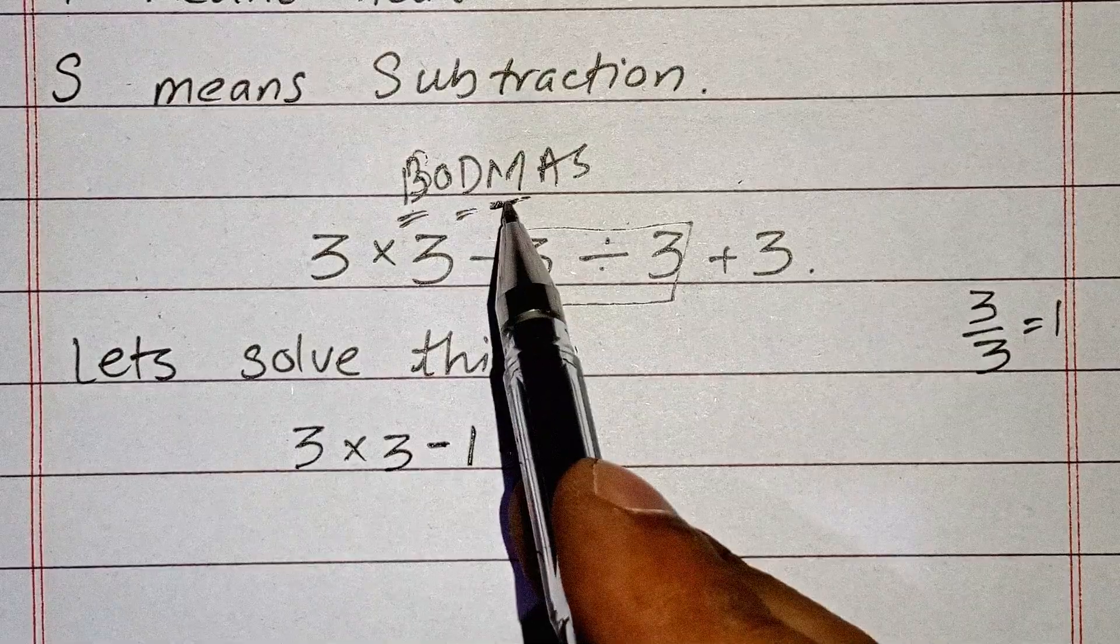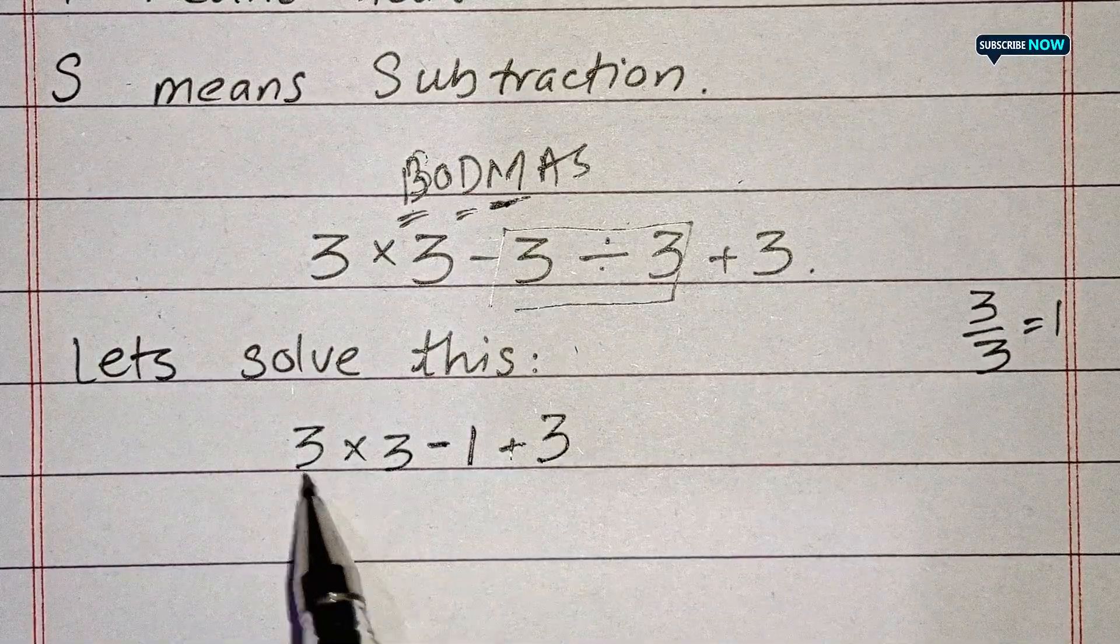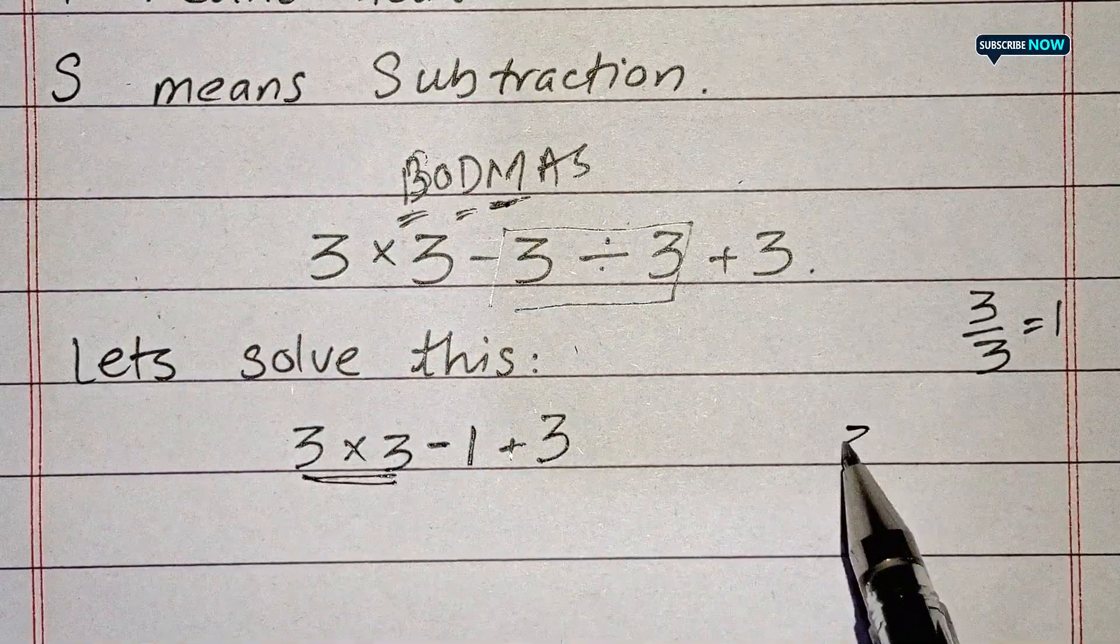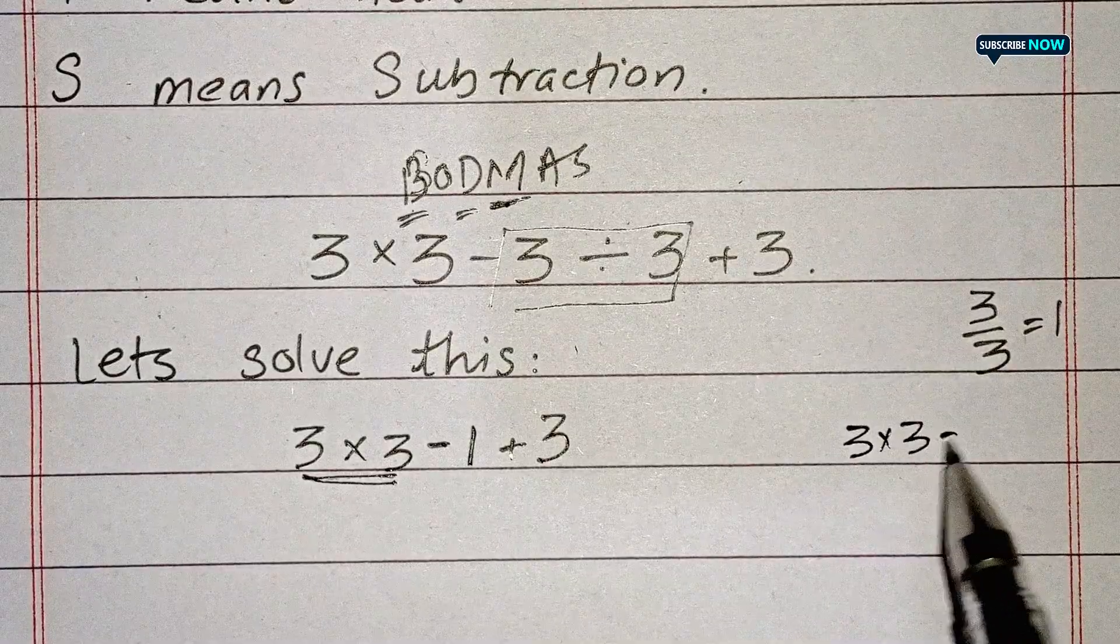BODMAS says you have to do multiplication after division. So you have to multiply these two things: 3×3 equals 9.